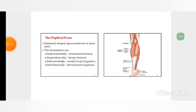Today's my topic is the popliteal fossa. Popliteal fossa, where does it exist? Popliteal fossa is a diamond shaped space posterior to knee joint.